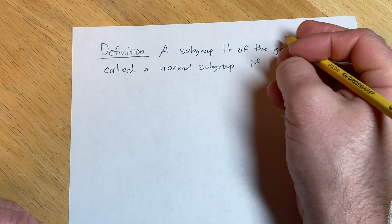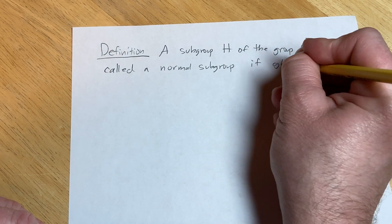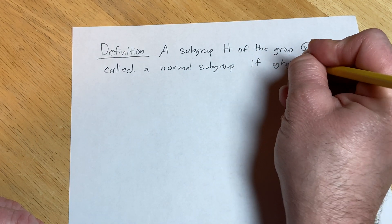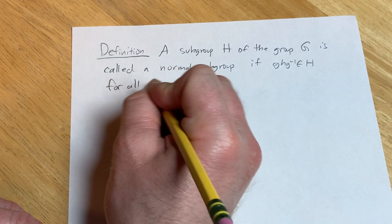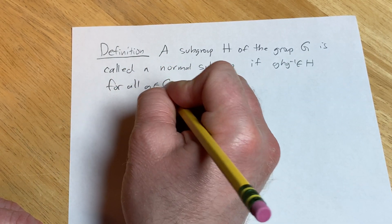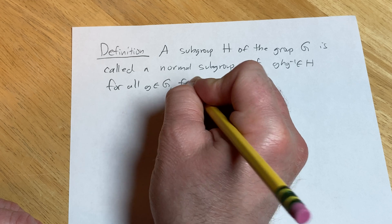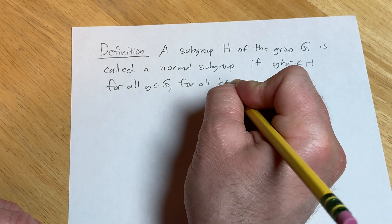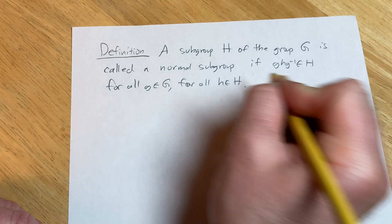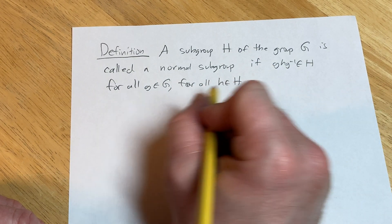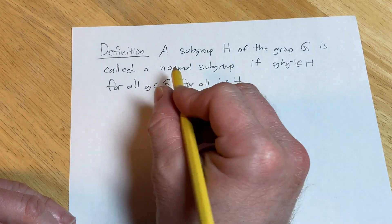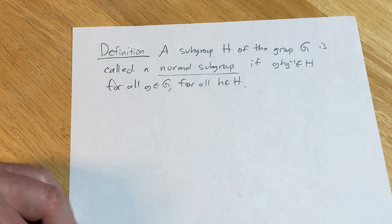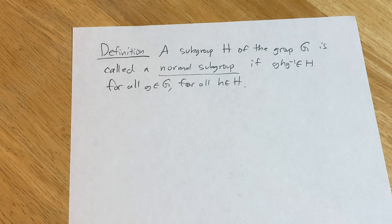...if gHg⁻¹ ⊆ H for all g in G and for all h in H. So it has to be true for all of those, and that's the definition. I hope this has been helpful. Take care.